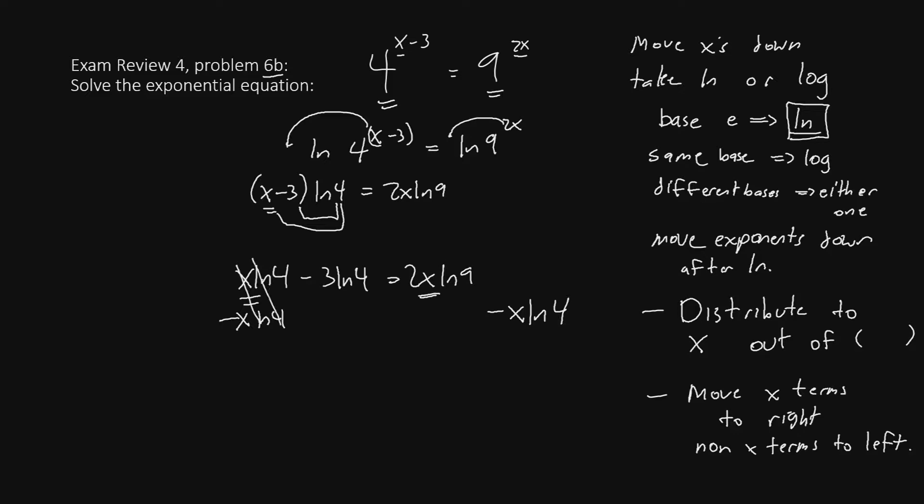So let's subtract x ln 4 from both sides. The x ln 4 will drop out. We now have negative 3 ln 4 equals 2x ln 9 minus x ln 4.